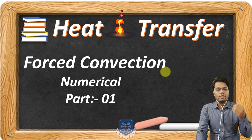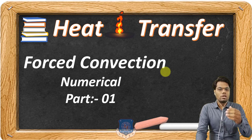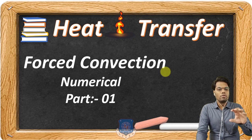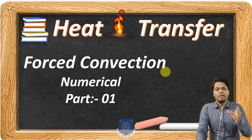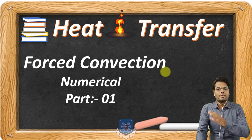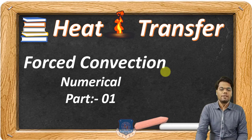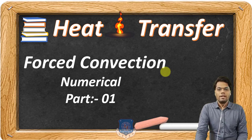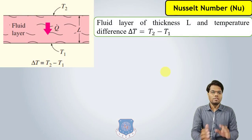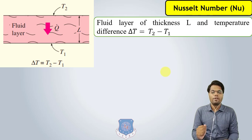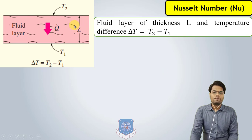Then we will solve some numericals based on forced convection, in which the fluid is flowing with the help of some external arrangement such as a pump. So first, let us understand the physical significance of these dimensionless numbers. The first number is the Nusselt number — what is it and what is its physical significance? To understand, first consider this figure.